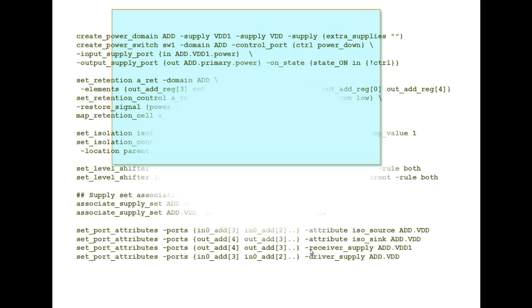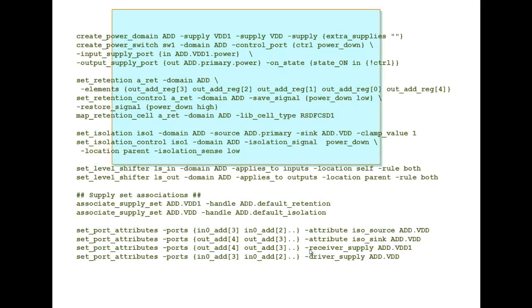In a Hierarchical Flow, first we load the block level UPF using loadupf-scope, the block name and the UPF file. In this case, a-iss.upf file is as shown. It has its own Power Domain Add, Power Switch Strategy, Retention Strategy, Isolation and Level Shifter Strategies defined. It also has its own Associate Supply Set and Set Port Attribute Constructs for Block Level Implementation.